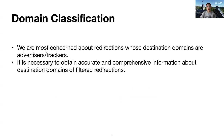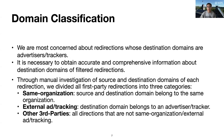Like the filtering we did before, we are mostly concerned about redirections whose destination domains are advertisers or trackers. To get accurate and comprehensive information about destination domains of filtered redirections, we did domain classification. We extracted all source and destination domain pairs and performed manual domain tagging. Then we divided all first-party redirections into three categories: redirections whose source and destination domain belong to the same organization are tagged as 'same organization'; redirections whose destination domain belongs to an advertiser or tracker are tagged as 'external ad or tracking'; and all other redirections are tagged as 'other third parties.'